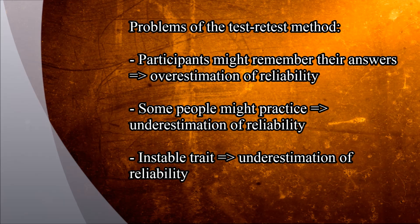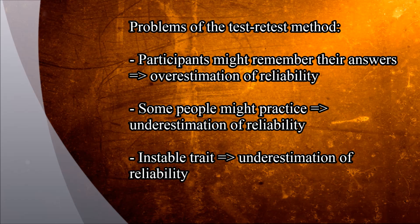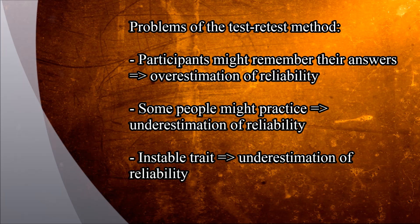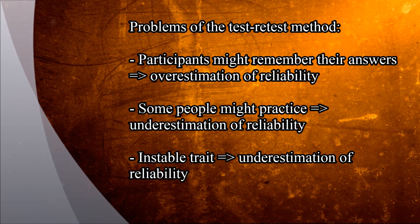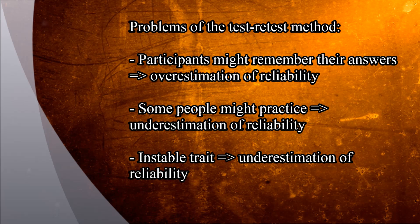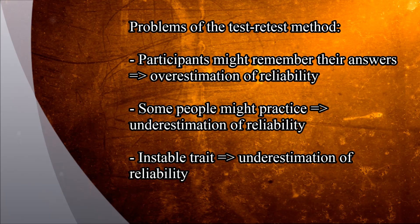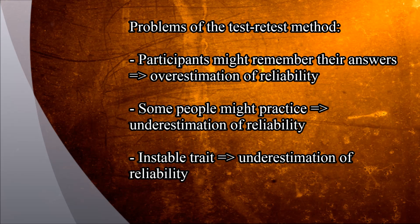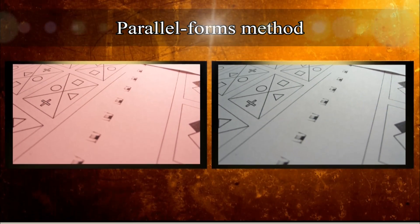In case of ability tests like an intelligence test, it can happen that some people who are very conscientious begin to search for similar tasks on the internet because they want to improve their results in the second intelligence testing. This would be an unsystematic change which leads to an underestimation of the reliability of the test.